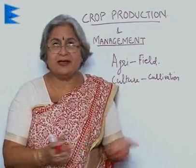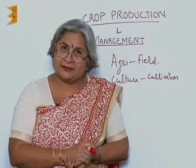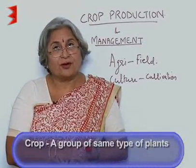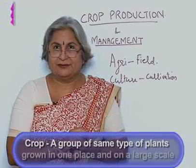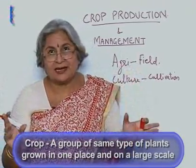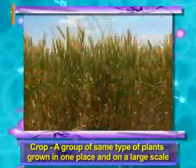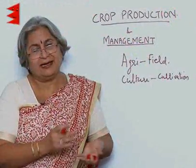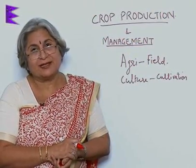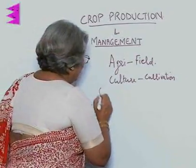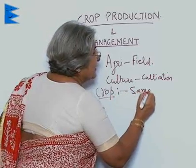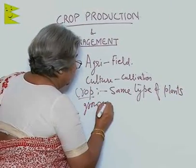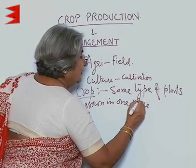What is a crop? We understand that there are plants, and we can grow plants — maybe some of you have a kitchen garden at your backyard. But then, what is a crop? A crop is a group of the same type of plants which are grown in one place and on a large scale. For example, if there is wheat, then the entire huge area running into acres has only wheat plants. Similarly, if there is paddy, there are only paddy plants and so on.